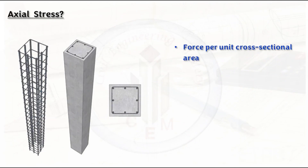Axial stress is the stress produced in a column when it is subjected to compressive load. Since a column is a compression member, it is subjected to compressive load along its longitudinal axis. Axial compressive stress is defined as force per unit cross-sectional area — the load acting on the member divided by the cross-sectional area, which is the breadth times width of the column.